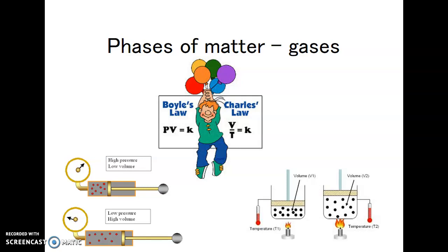Charles' Law deals with temperature: when you heat something up, the volume expands. When temperature goes up, volume goes up; when temperature goes down, volume goes down. If you blow up a balloon and put it in the refrigerator, it gets smaller because the air molecules are moving at a slower rate. Likewise, blow a balloon up halfway and put it in a hot room and it expands. Like a basketball left in a cold car that seems flat — after half an hour in the gym it's fully bouncing because it's gotten hot and the molecules move faster.